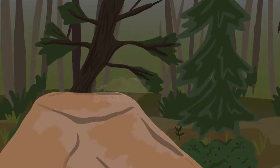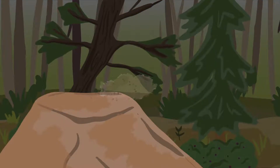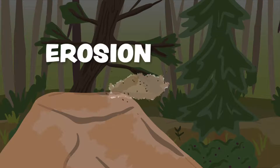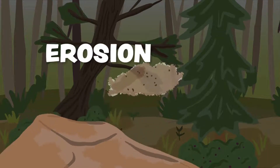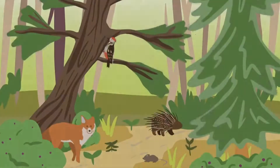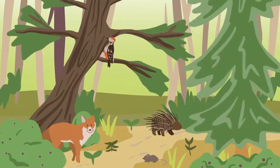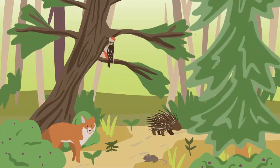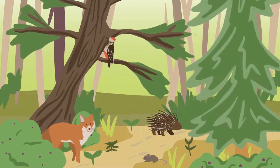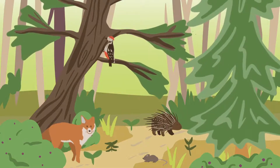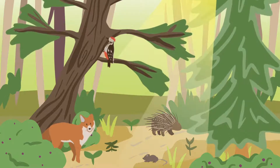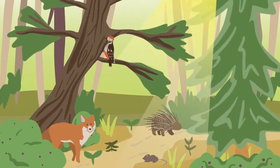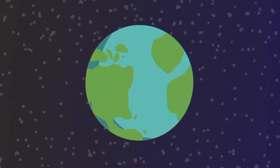Plants are a very important part of their habitats too. Plants help protect the soil and prevent erosion. Plants provide homes and shelters for many animals. They help balance the temperature by keeping the air cool and providing shade for animals. Plants give food and medicine for many creatures, including humans.